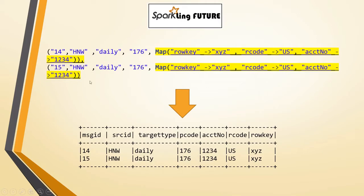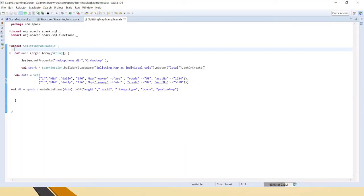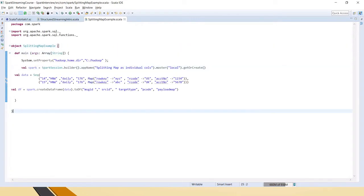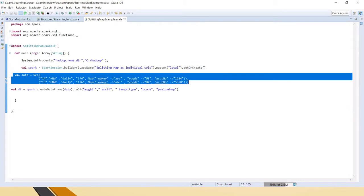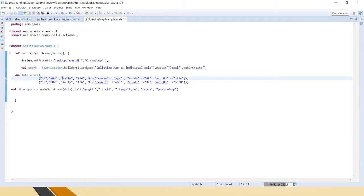Today I will be taking this example. If you see here, this is a sequence of values — column 1, column 2, column 3, column 4, and column 5 is a map. A map is a collection that has key-value pairs. I wanted to flatten that structure into a fully flattened structure, and we'll look at some sample code to achieve this. I have created an object, defined the main method, created the Spark session, and this is the data we have seen in the PPT — normal strings and a map.